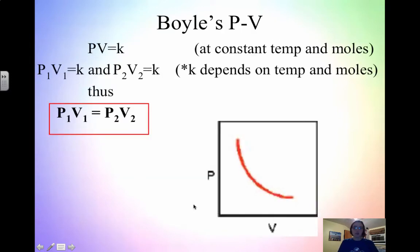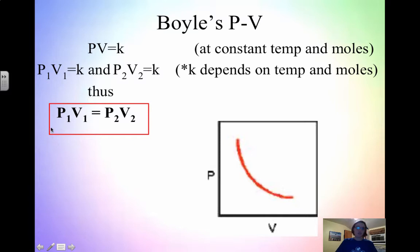With Boyle's Law, pressure and volume are inversely proportional, so pressure times volume equals a constant. This constant depends on temperature and moles. Boyle's Law is P1V1 = P2V2 — pressure one times volume one equals pressure two times volume two. You can think of it as 'boil peas and vegetables': P1V1 = P2V2.